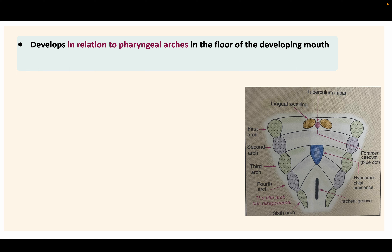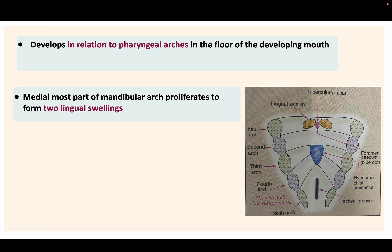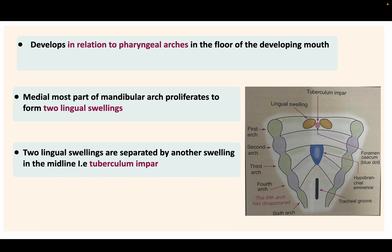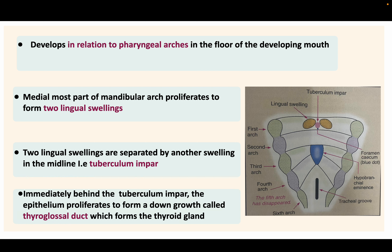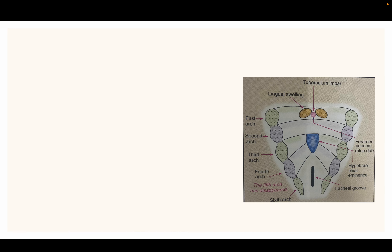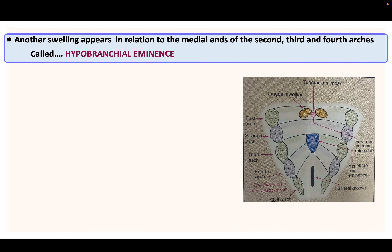The tongue develops in relation to the pharyngeal arches in the floor of the developing mouth. The medial-most part of the mandibular arch (first arch) proliferates to form two lingual swellings, which are separated by another swelling in the midline called the tuberculum impar. Immediately behind the tuberculum impar, the epithelium proliferates to form a downgrowth called the thyroglossal duct, which forms the thyroid gland.